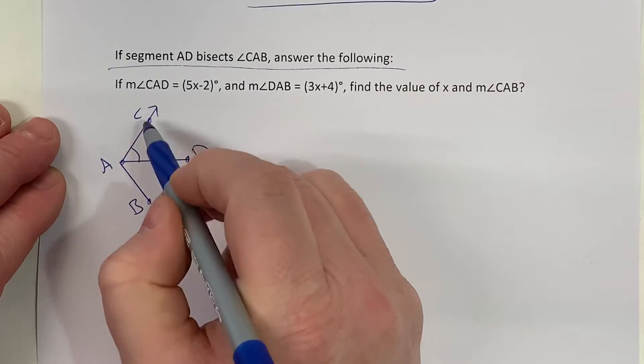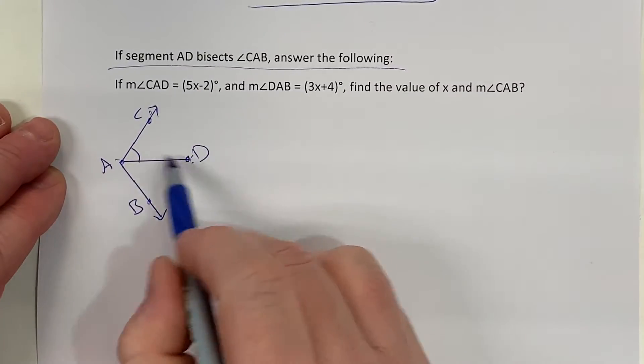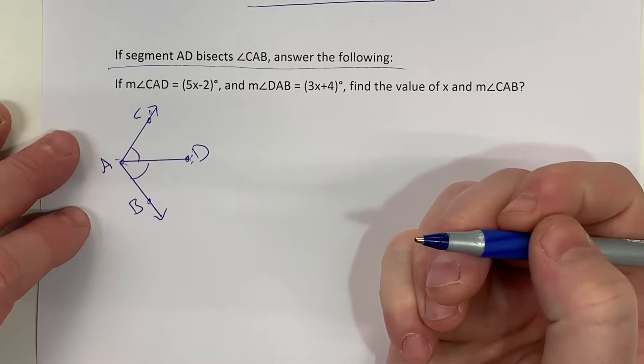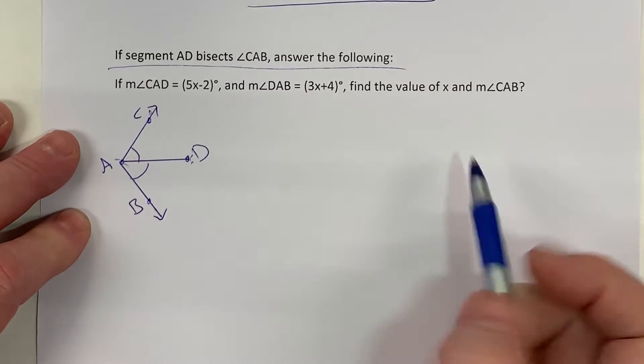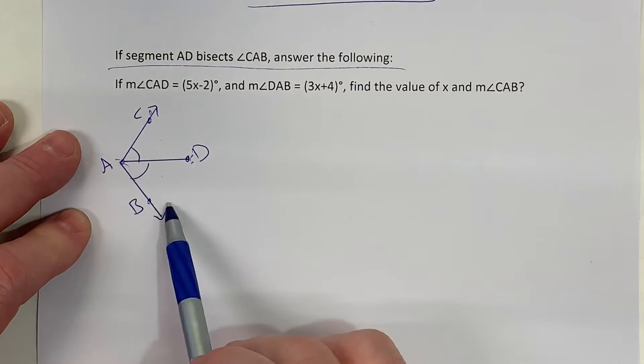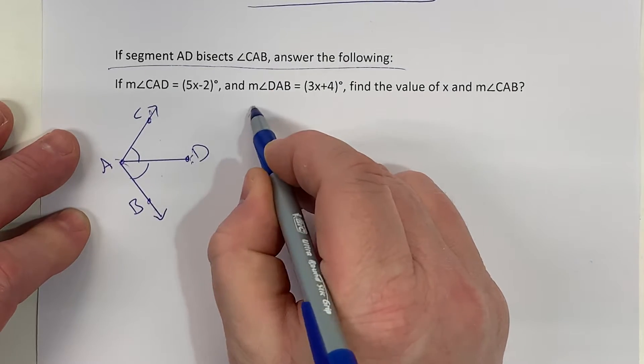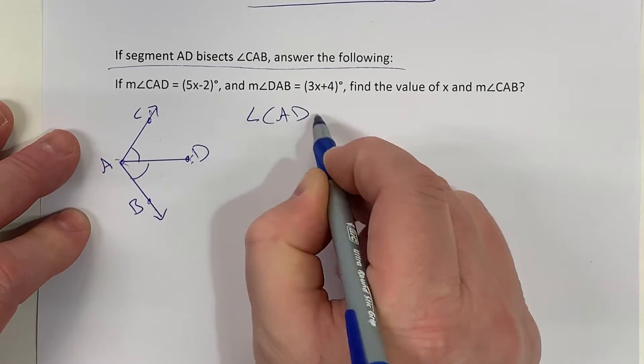So we know that CAD and DAB are equal to each other. So I'm going to write my two relationships. I have the first angle plus the second angle equals the whole thing. So angle CAD plus angle DAB equals the whole thing, angle CAB.